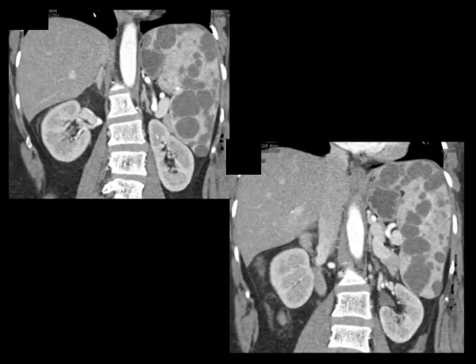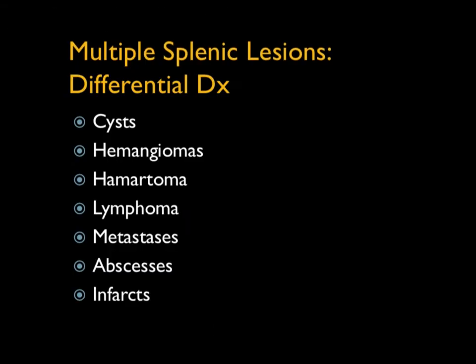Here are a couple more images. If you asked me what the differential of multiple splenic lesions is, probably cysts are at the top of the list, but then hemangiomas, hematomas, lymphoma, mets, abscesses, and infarcts. Basically anything and everything can be multiple, but cysts are the most common.